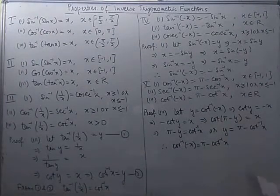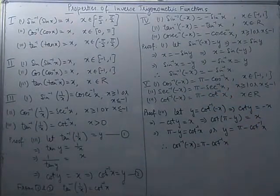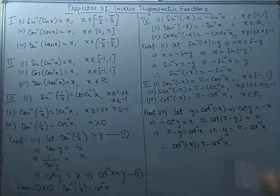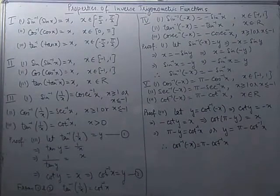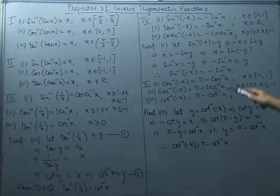Recalling the principal value branch for cos⁻¹x: it is also the closed interval [0, π]. For sec⁻¹(-x), the principal value branch is [0, π] excluding π/2. You can find a similarity among these three functions — cos⁻¹, sec⁻¹, and cot⁻¹ — which is why they all follow the form π minus the inverse function.